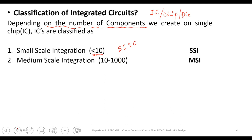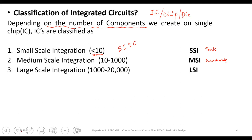The next type is Medium Scale Integration, or MSI, which includes circuits with roughly 10 to 2000 devices. The third type is Large Scale Integration, or LSI, where thousands of devices are accommodated on a small chip area — typically around a 4mm by 4mm area.